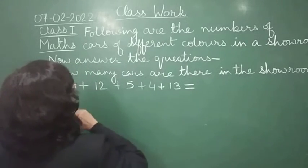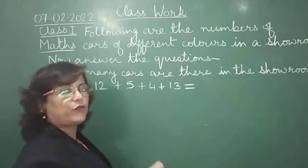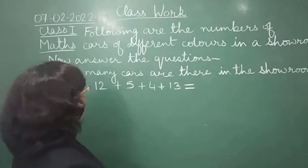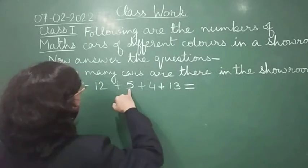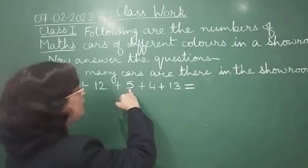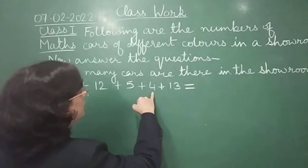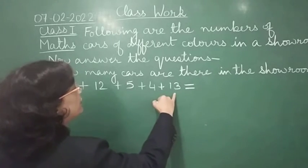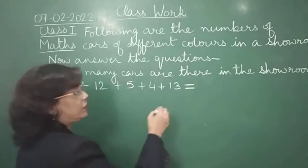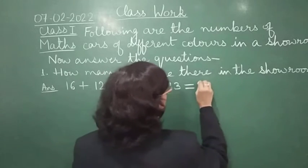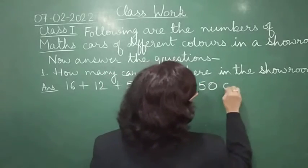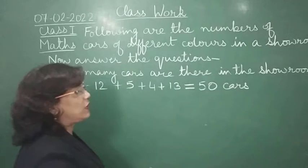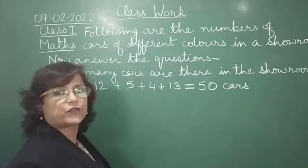So 16 plus 12 gives 28. Adding blue cars: 28 plus 5 gives 33. Adding black cars: 33 plus 4 gives 37. Adding white cars: 37 plus 13 gives 50. So the total number of cars in the showroom is 50. Answer is 50.